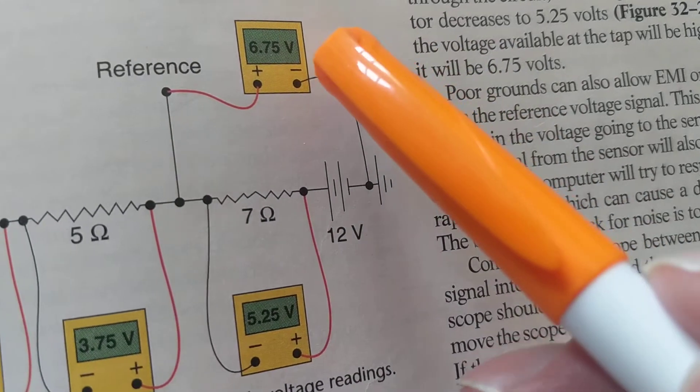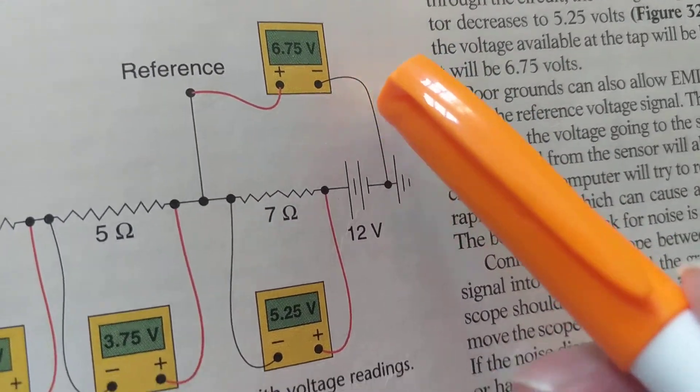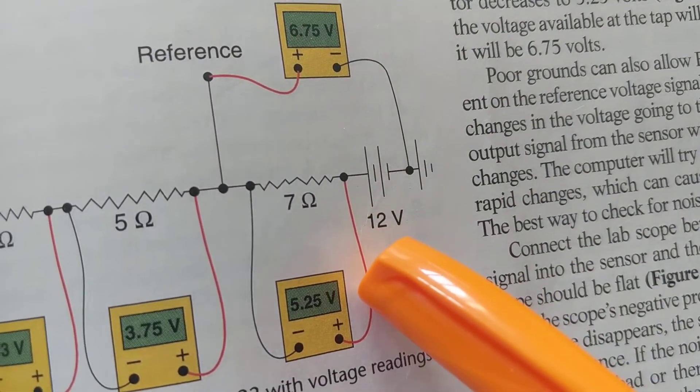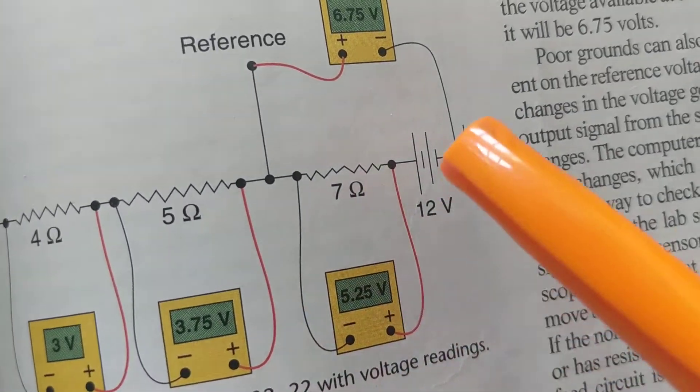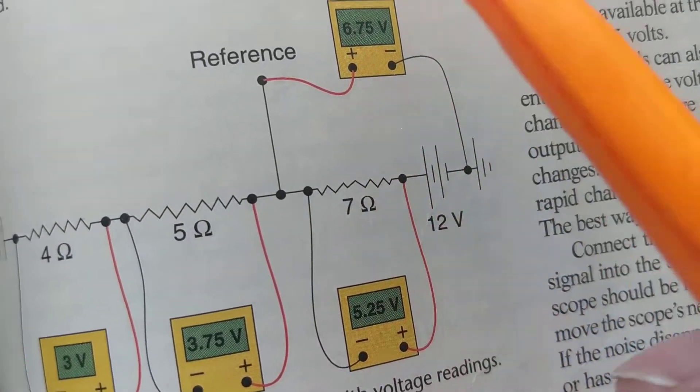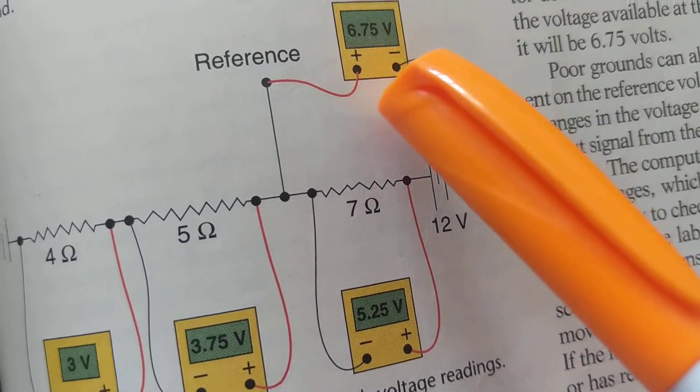So here it is now over here. How much are we going to measure? Big difference. Across that we measured 5.25. With reference to ground, remember we flipped the meter. Positive here, negative here.